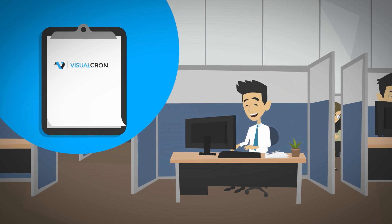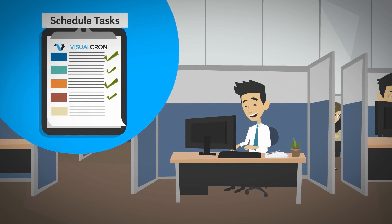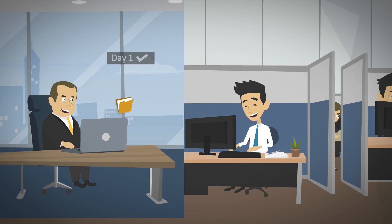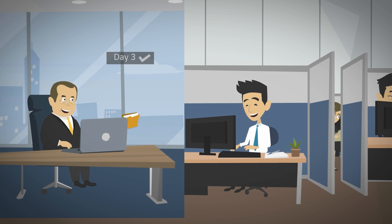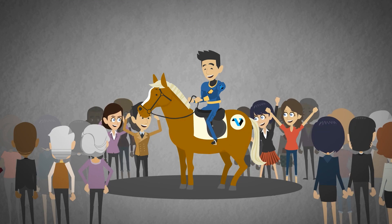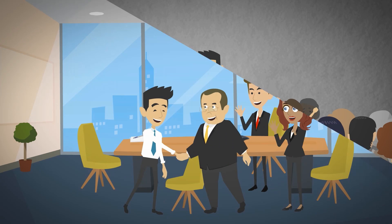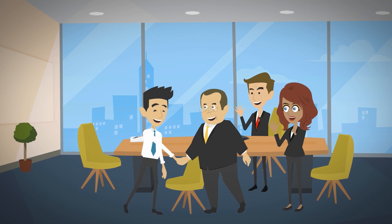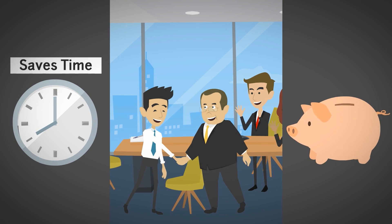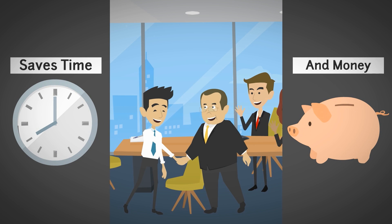With VisualCron, Jeff scheduled these tasks very easily, and reports are delivered to his boss automatically every day. Now Jeff is on a crusade to automate even more things in the company. Jeff is happy. His boss is happy. And the company saves time and money.